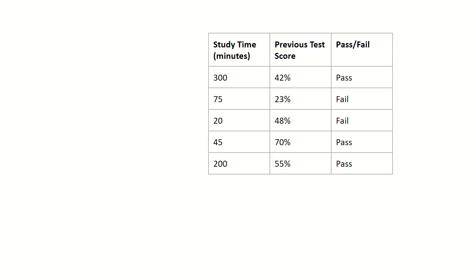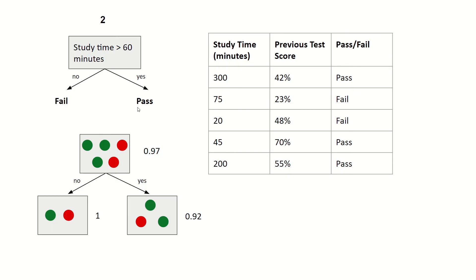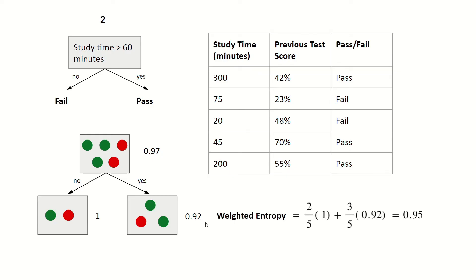Similarly, we can look at the same process for our second decision tree, where we split on whether the student has a study time larger than 60 minutes. Before, we had an entropy of 0.97, and after performing the split we have entropies of 1 and 0.92, giving a weighted entropy of 0.95. So this split results in only a small decrease in entropy — we only went from 0.97 to 0.95.